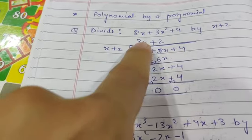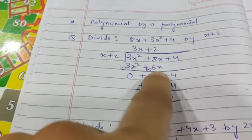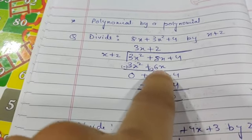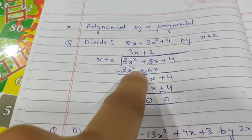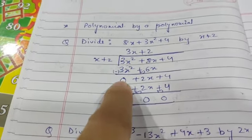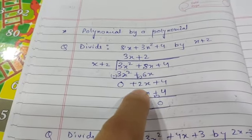We subtract: 3x squared cancels, 8x minus 6x is plus 2x. Then we bring down plus 4.